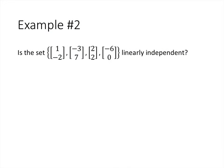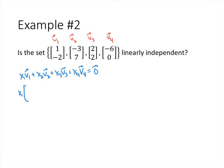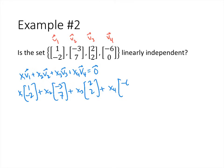Let's do another example. This time we have four vectors, v1, v2, v3, and v4. The vector equation is x1v1 plus x2v2 plus x3v3 plus x4v4 equals the 0 vector. Plugging in our vectors, we have (1, -2, -3, 7), (2, 2, -6, 0), and the corresponding augmented matrix is set up with those entries and a column of zeros.